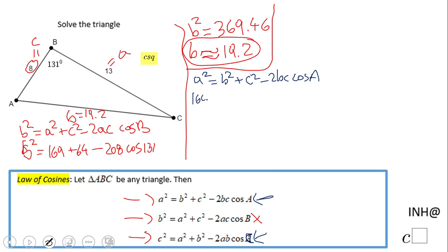So we have 169 equals b², which is 369.46, plus c², which is 8², so 64. Now we have 2 times 19.2, which is b, times c, which is 8. That'll be 307.2, and we have this cosine—this is the guy we need to find out, cosine of A.